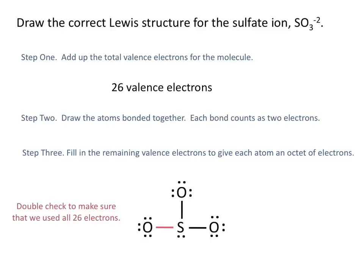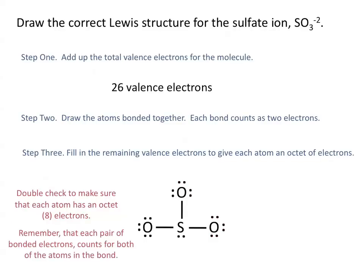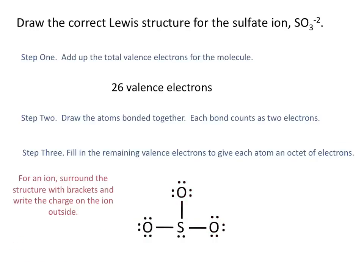We double-check that all 26 electrons are used, counting each bond as two, and confirm all 26 are accounted for. Sulfur is surrounded by six bonding electrons and two non-bonding electrons, giving it an octet. Each oxygen atom has two bonding electrons and six non-bonding electrons, also giving each an octet. Since this is an ion, we surround the entire structure with brackets and write the charge on the outside. This is the correct Lewis structure for the sulfate ion, SO3 2-.